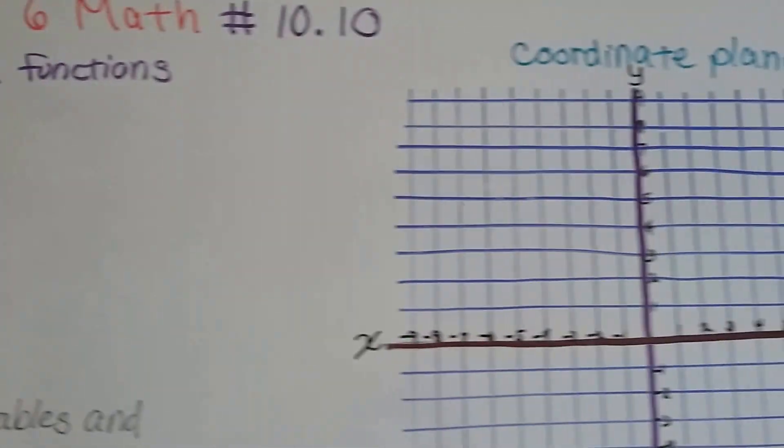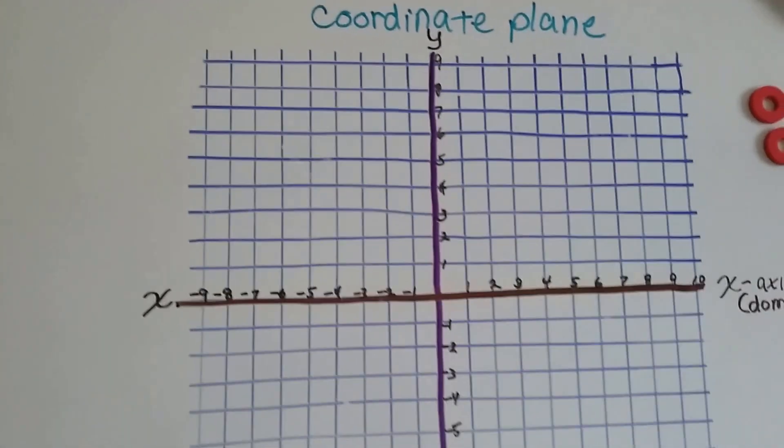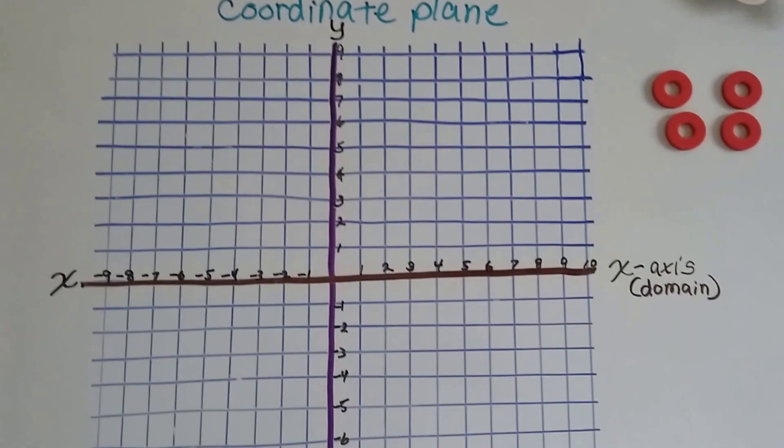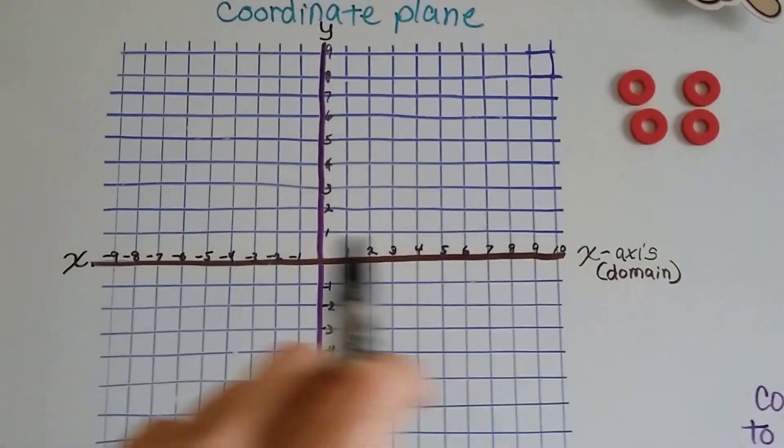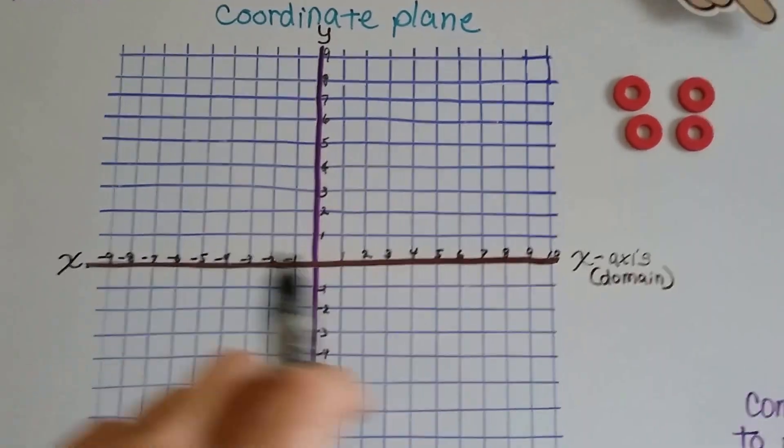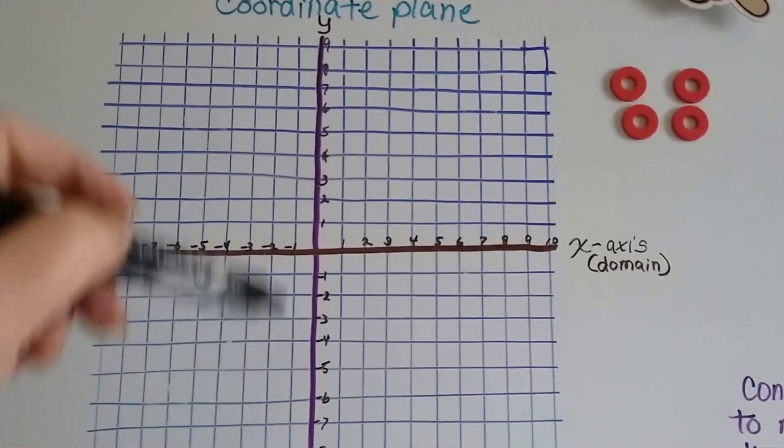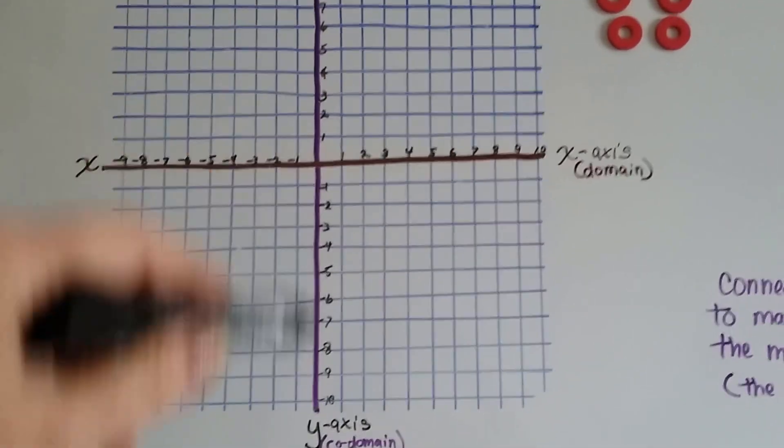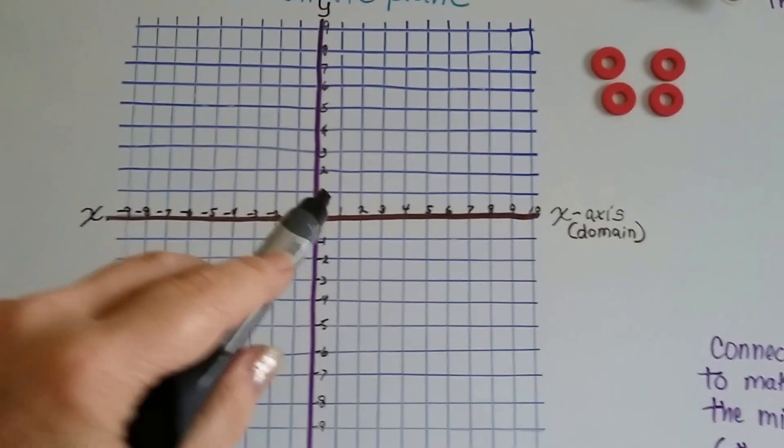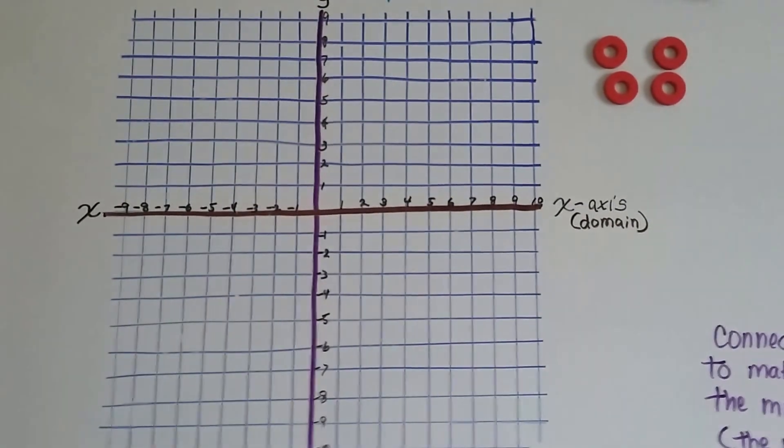If you've been watching the last few videos, we've been talking about a coordinate plane and how the x-axis, the horizontal line going across here, which is also called the domain, is just a number line that crosses a y-axis, which is called a codomain, and it's a number line, and they meet at 0, 0 at the origin in the center, right there.